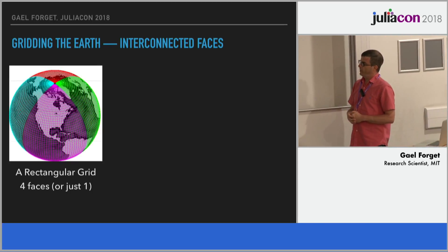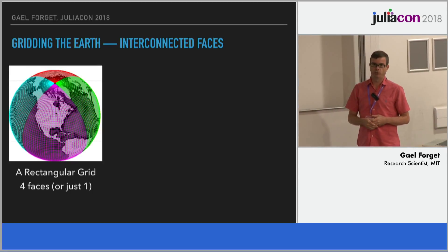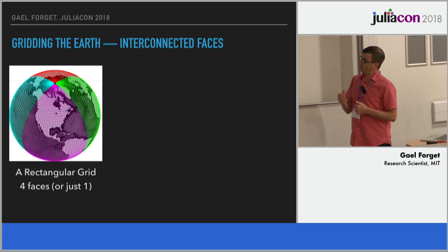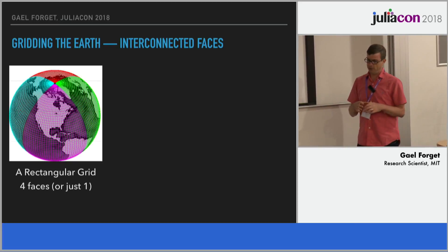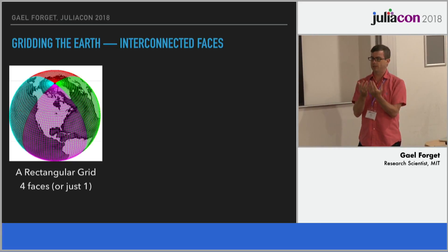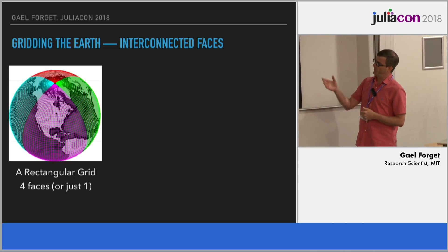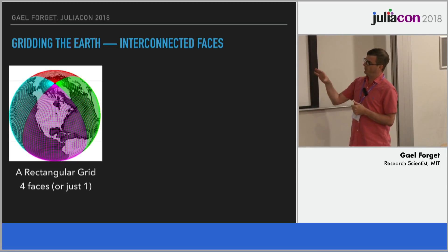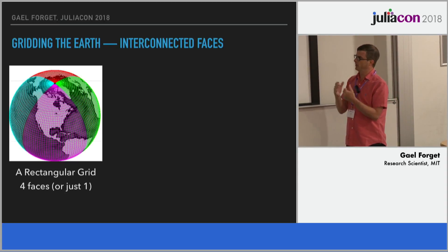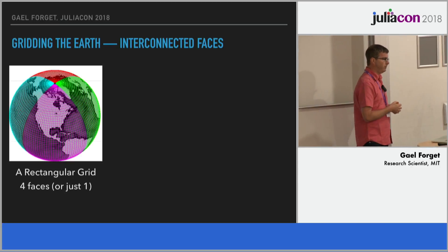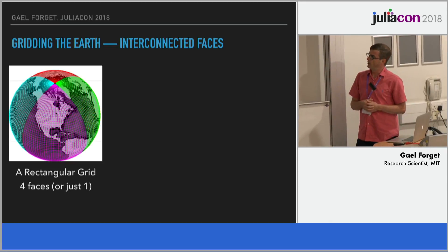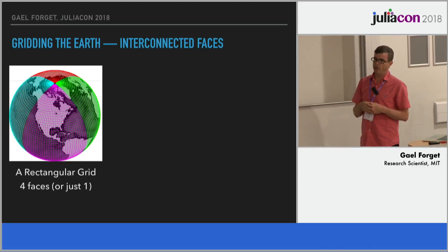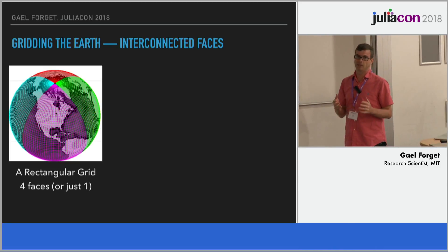So what do I mean by global grids? I'm going to show you maybe the three types of grids most commonly used in ocean system modeling. The first one is the simplest — you can think of it as just one big array being wrapped around a globe, represented here with four different colors that you can think of as faces. You may wonder why I go any further — this looks simple enough.